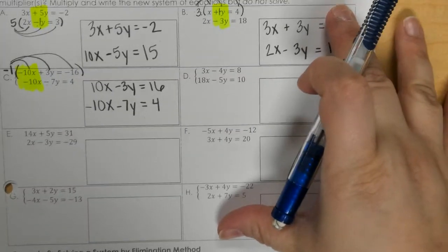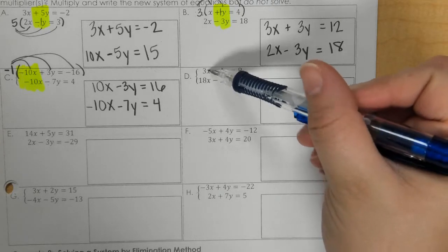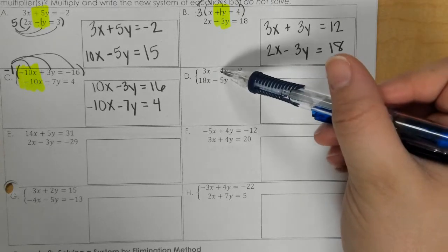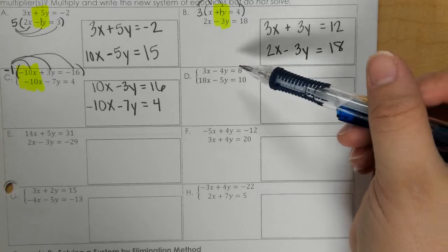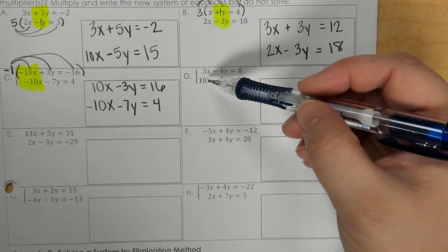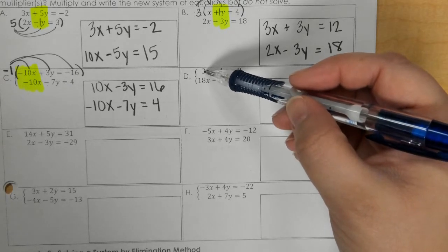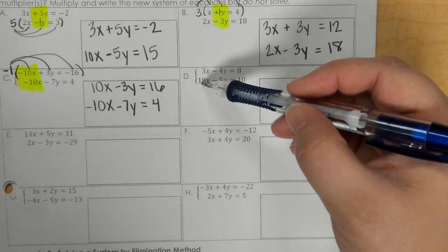Letter D, we have 3x and 18. Those would not be opposites. And then negative 4 and negative 5, that makes negative 9, so that's not opposite. So now we have to decide what do we need to cancel. And I'm thinking that we should cancel the x's because 3 times something can get to 18.